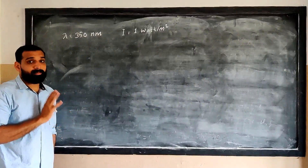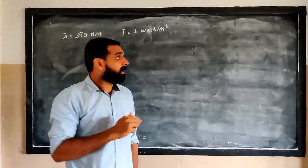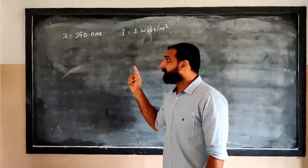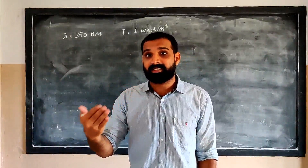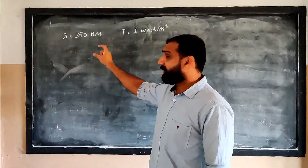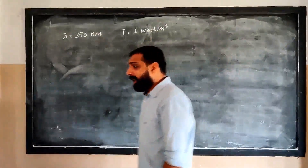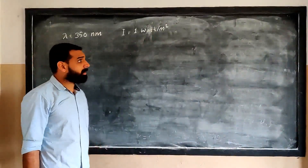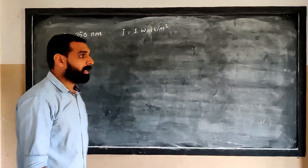Now, the problem states ultraviolet light of wavelength 350 nanometer is incident. The intensity is given. We need to find the maximum kinetic energy of the photoelectrons.